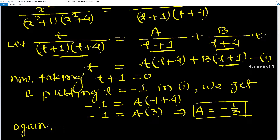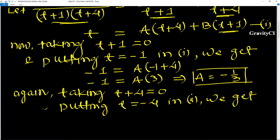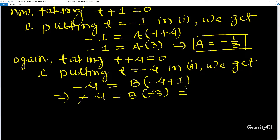Now taking t+4=0, so t = -4. Putting it in equation one: -4 = B(-4+1), so -4 = B(-3), therefore B = 4/3.